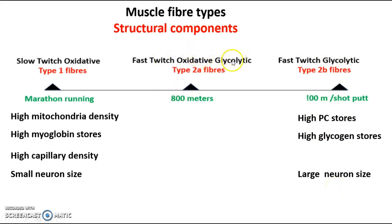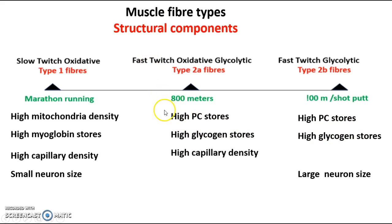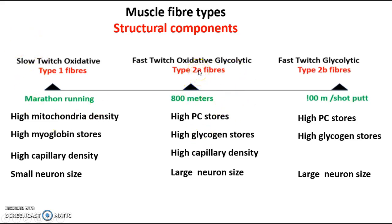The middle fibre, the fast twitch oxidative glycolytic or type 2a, is a mix of slow and fast twitch. It has high PC stores and high glycogen stores because it's still a fast fibre, but it also has a high capillary density coming from the slow twitch side, and a large neuron size. In 12 years of teaching A-level PE, there has never been a question specifically on the 2a fibre, so just make sure you understand that most of its structural characteristics are the same as for the fast twitch glycolytic. The lesson will focus on functional characteristics. Thanks for your time.